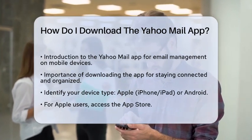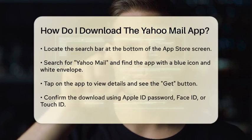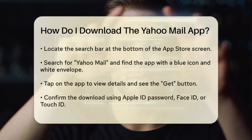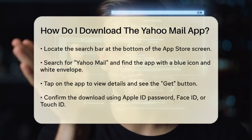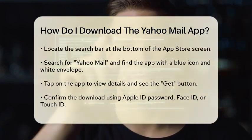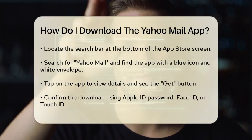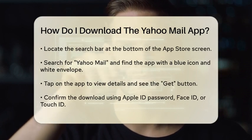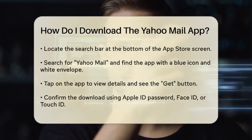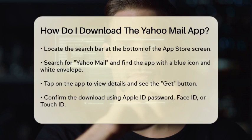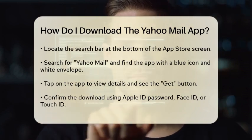For Apple users, open the App Store on your device. Once the App Store is open, look for the search bar at the bottom of the screen. Type in Yahoo Mail and press the search button. You will see a list of applications related to your search. Find the Yahoo Mail app, which is typically identified by its blue icon with a white envelope. Tap on the app to view more details.